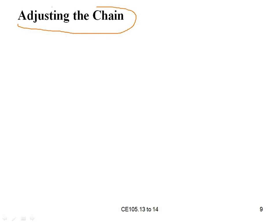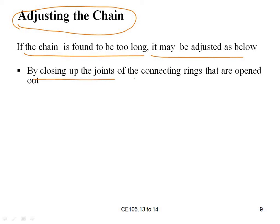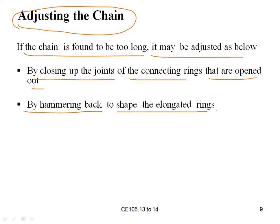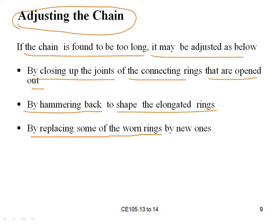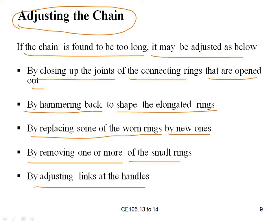To adjust a chain found to be too long, we can: close up the joints of the connecting rings that have opened out; hammer back the elongated rings to restore their original shape; replace worn rings with new ones; and remove one or more of the small rings, or adjust links at the handles.